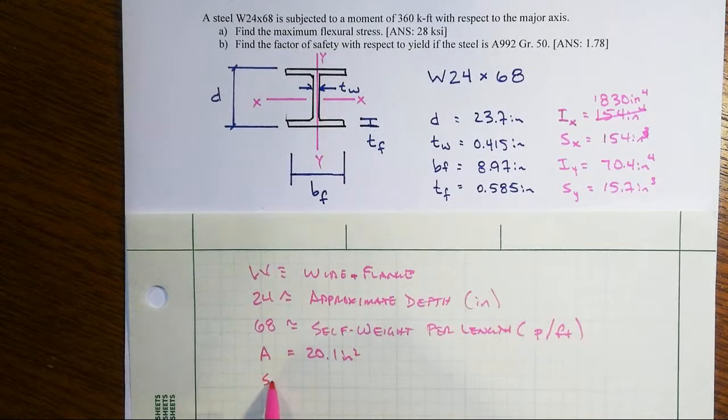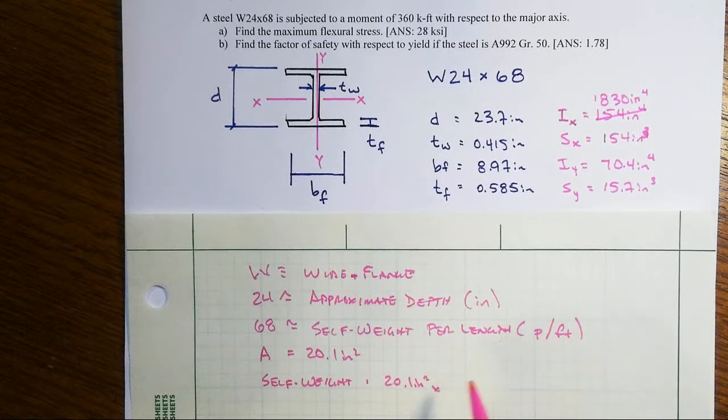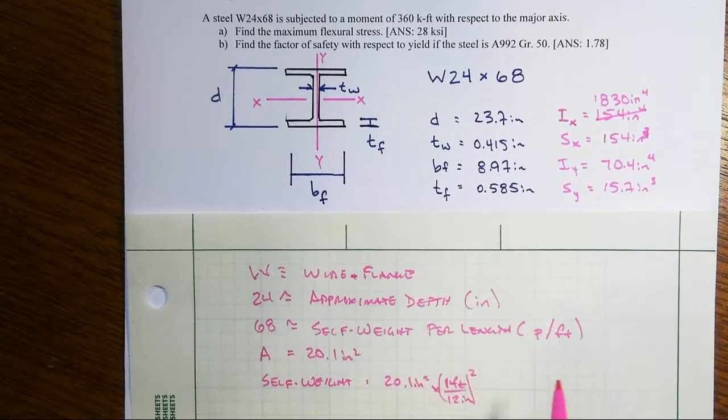If it's true, then the self-weight per foot would be taking the 20.1 square inches, convert it to square feet. So that would be one foot per 12 inches, and then we'll square that, then times the unit weight of steel, which is 490 pounds per cubic foot.